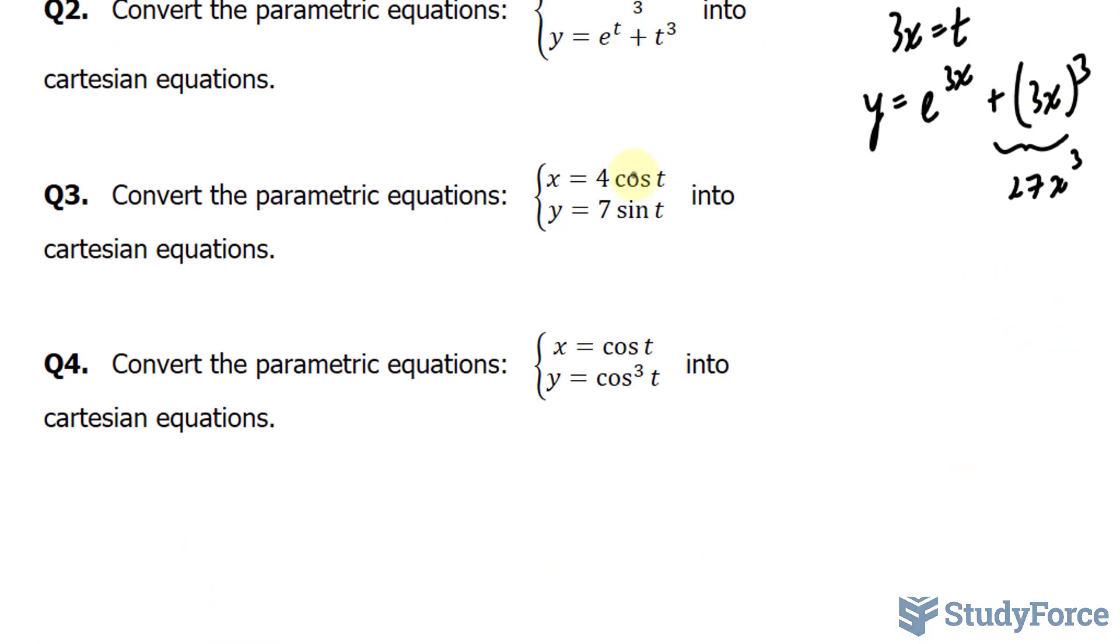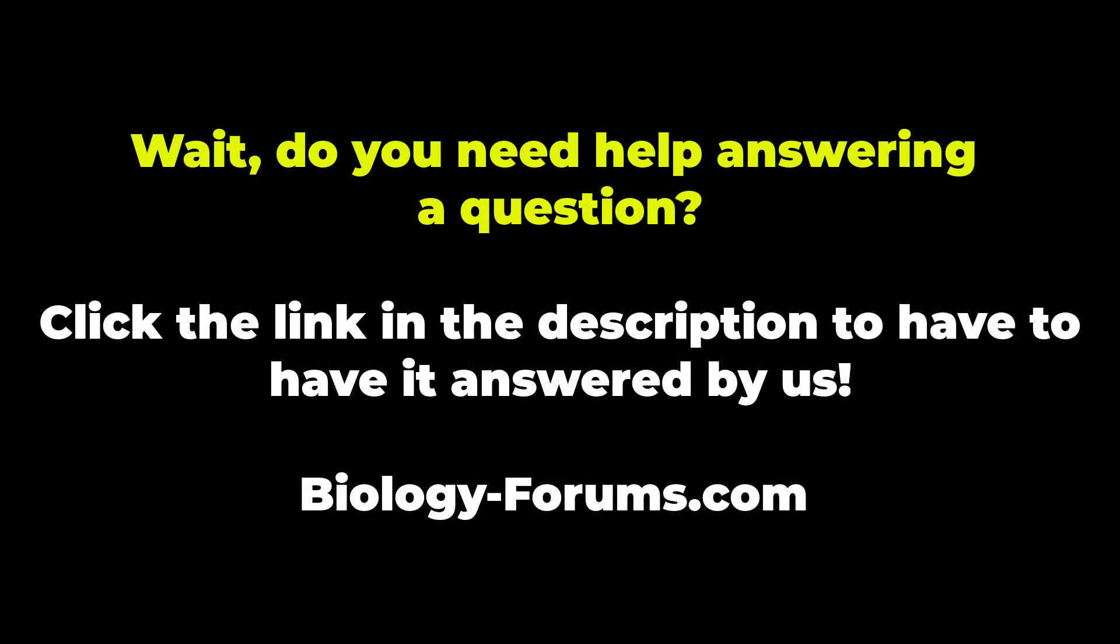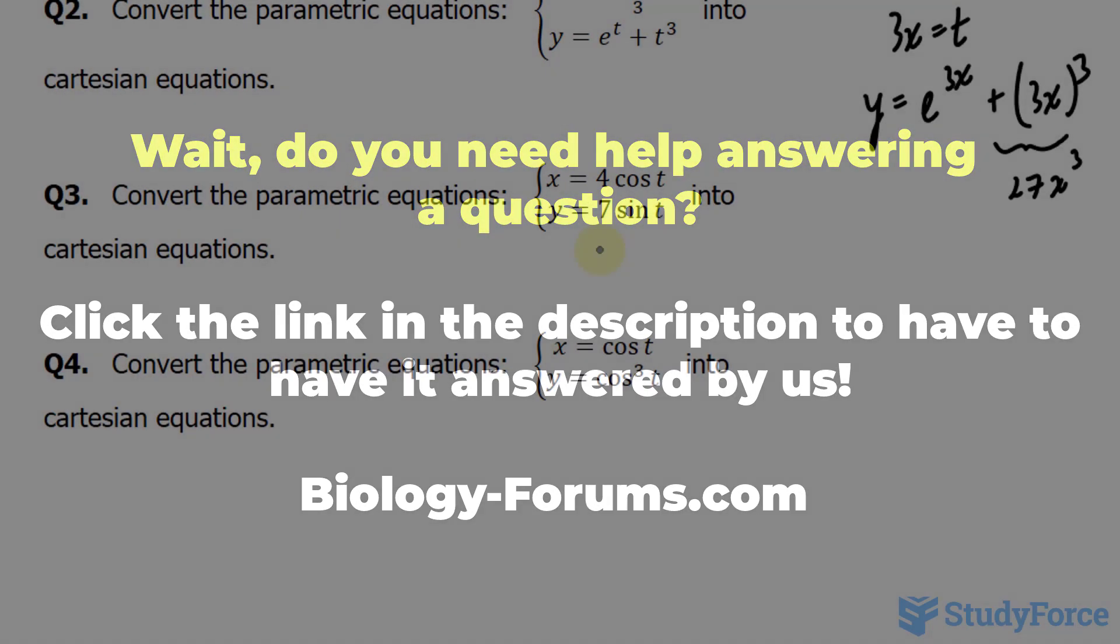Next, in question number 3, we have these two parametric equations. And this one is slightly tricky. At first glance, you might want to isolate for t by taking cosine inverse of both sides. Although that's not the best mode of action here.